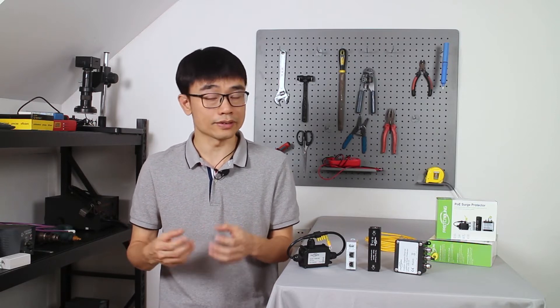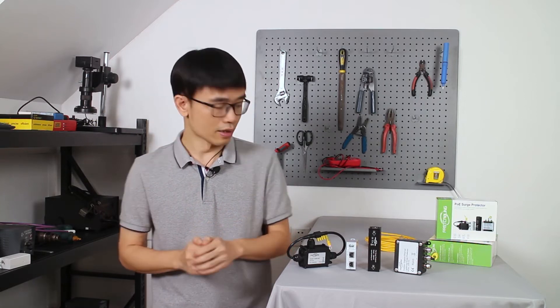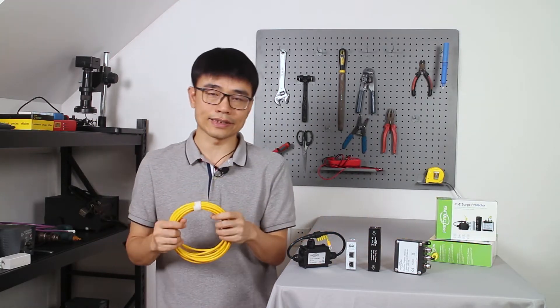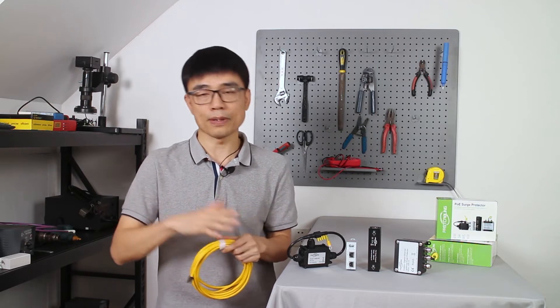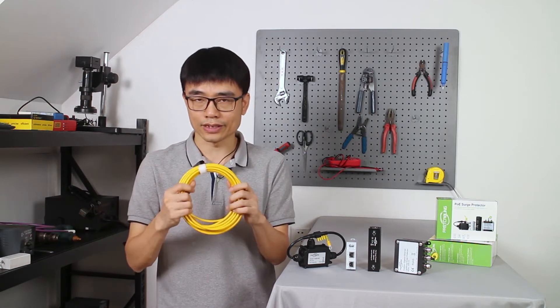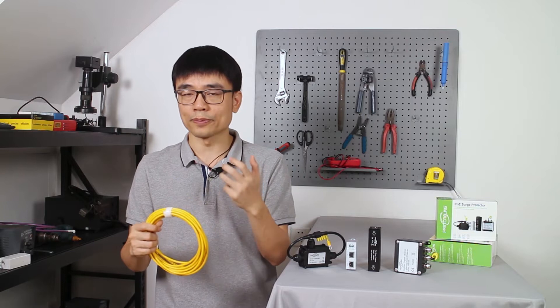The first question is why we need a surge protector. You see, the surge is everywhere in the environment. Usually we need to use K5 or K6 Ethernet cable to connect the camera back to the PoE switch. This is copper, and the copper will absorb the surge.